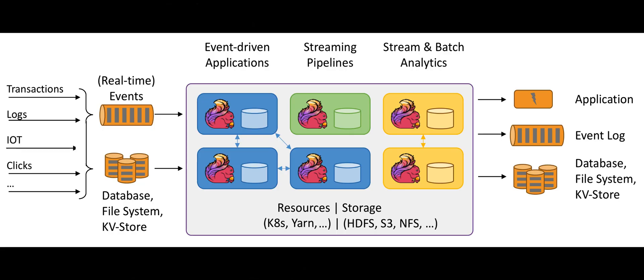Batch processing: Flink also supports batch processing, making it versatile for both real-time and batch data processing needs. Fault tolerance: Flink provides robust fault-tolerance mechanisms, ensuring that data processing pipelines continue to function even in the presence of failures.